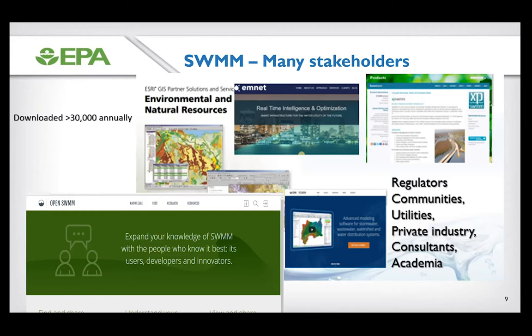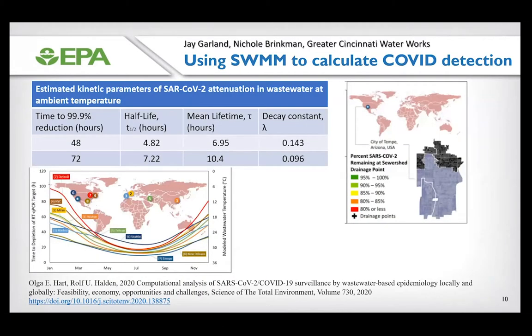Particularly, OpenSWMM by Kia Water has a SWMM code viewer that I find an excellent tool and use heavily myself. One notable project is using SWMM to calculate COVID detection in Arizona — Hart and Halden use SWMM to calculate kinetic parameters for COVID-19 attenuation in wastewater at different temperatures throughout the world. Using SWMM, they can strategically sample sewers to find communities with a high amount of COVID-19.